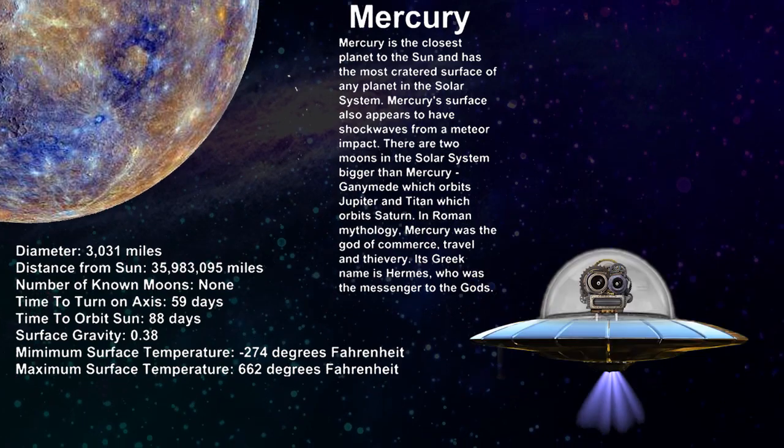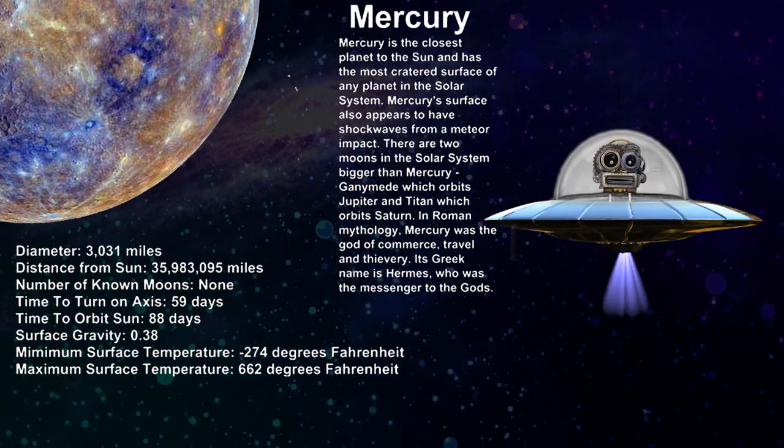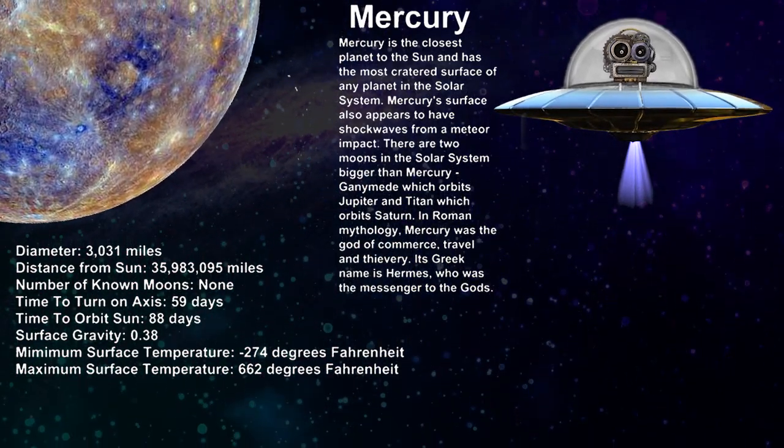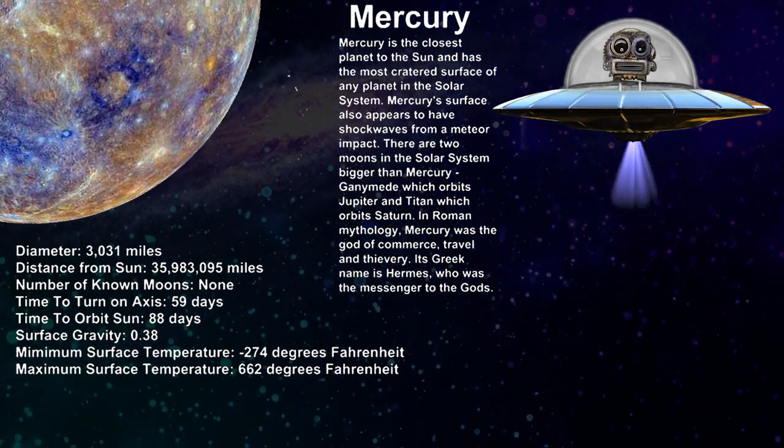Mercury is the closest planet to the sun. A year in Mercury is 88 days long.